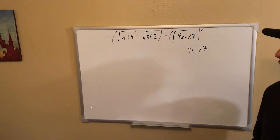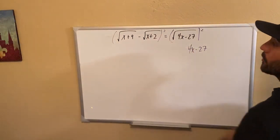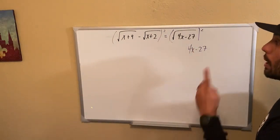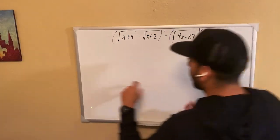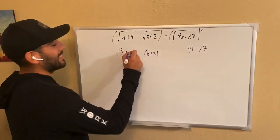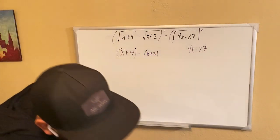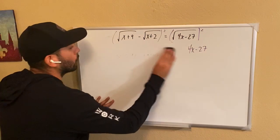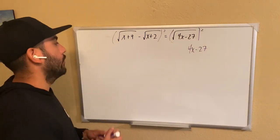Now the left side is going to be a little more interesting. Why? Because we have two radicals being subtracted. Most people would instantly say that, oh, we're just going to do an x plus 9 minus x plus 2. That is not correct. Okay, we don't want to do that. Why? Because the radicals are being tied together.